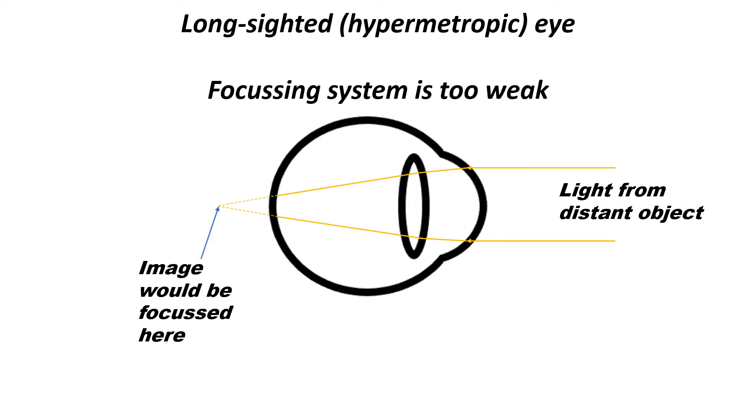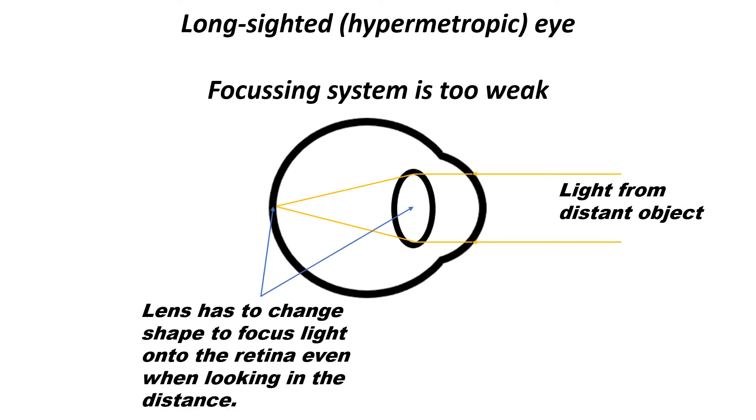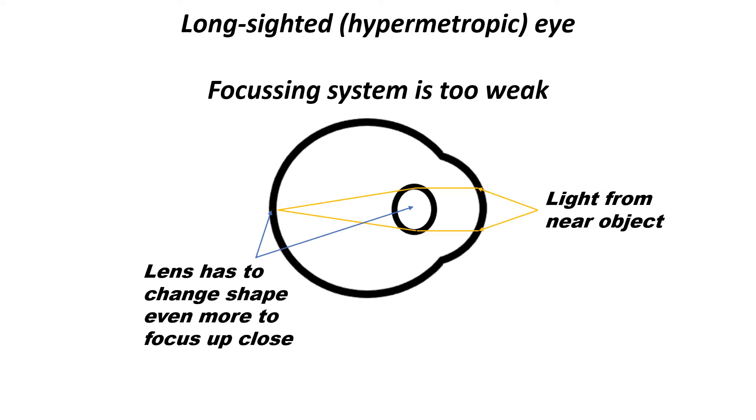In order to see clearly, the person has to apply focusing effort to make the lens change shape and get more powerful. When looking up close, the eye has to apply even more focusing effort to make the lens very powerful. This excessive focusing effort can result in eye strain, headaches, double vision, and in some cases, it can cause one eye to point in towards the nose.